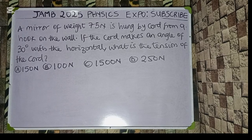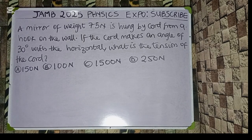A mirror weighing 75 newton is hung by a cord from a hook on the wall. If the cord makes an angle of 30 degrees with the horizontal, what is the tension of the cord? We have the following options — option A: 150 newton, option B: 100 newton, option C: 1500 newton, option D: 250 newton.